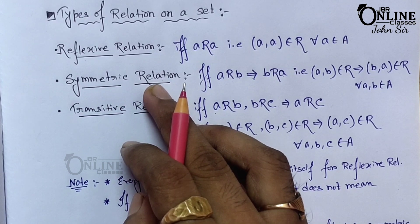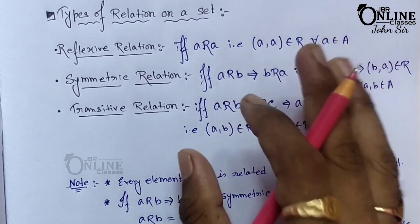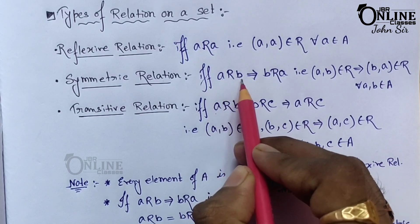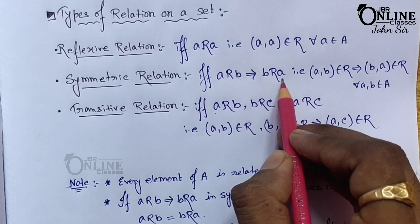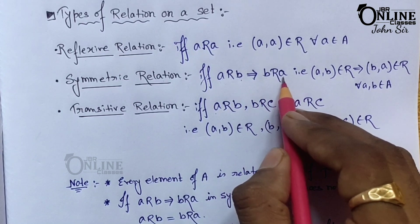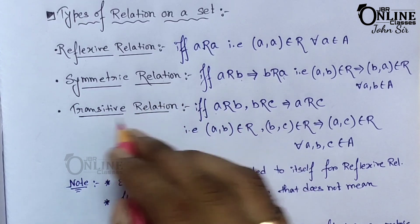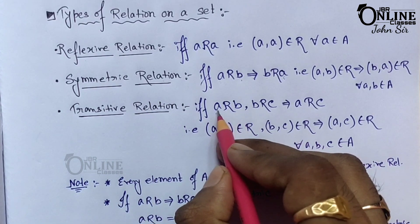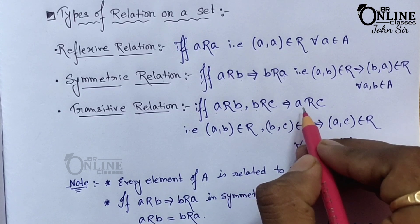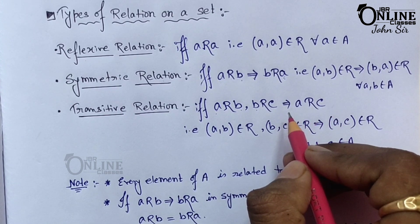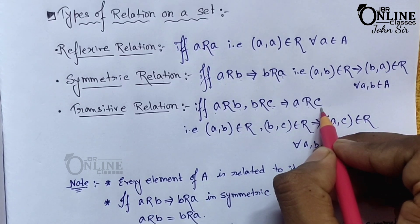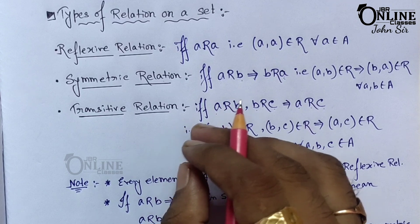For the symmetric relation: if triangle a is similar to triangle b, then definitely triangle b is similar to triangle a. That is called a symmetric relation. For the transitive relation: if triangle a is similar to b and triangle b is similar to c, then definitely triangle a is similar to c. That is the transitive relation.